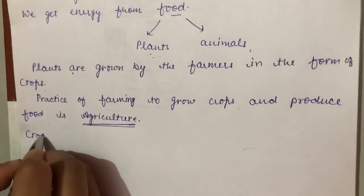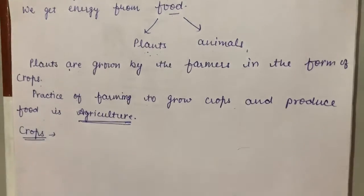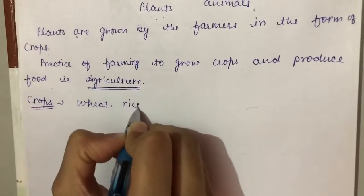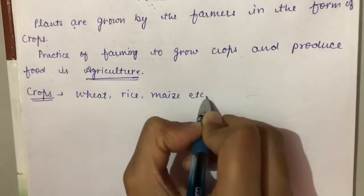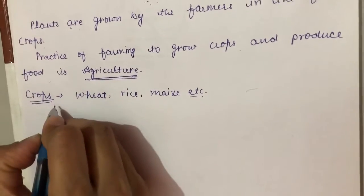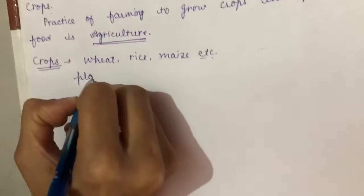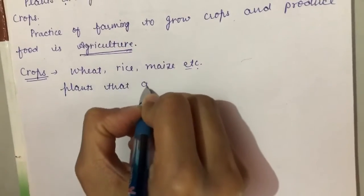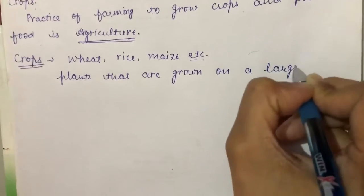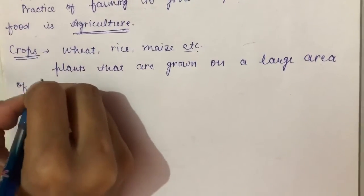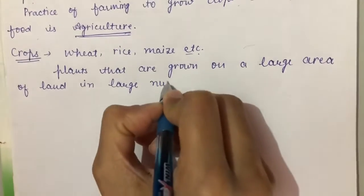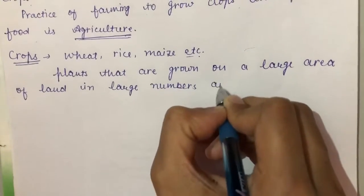Now we will discuss about the crops. Do you know what are crops? You have seen so many crops like wheat, rice, maize, etc. These are grown in large numbers on a large area of land. So we can say that plants that are grown on a large area of land in large numbers are crops.